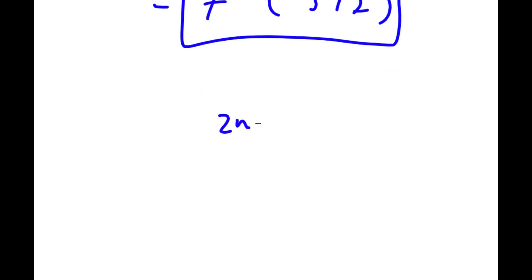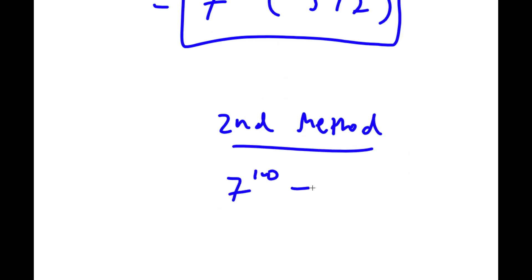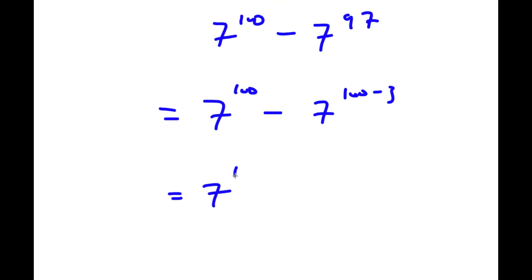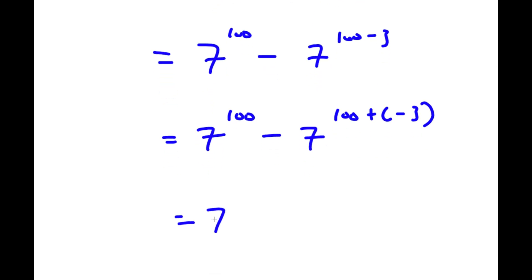Now I have a second method of solving this problem. I have 7 to the power of 100 minus 7 to the power of 97. This time, instead of changing 100 to 97 plus 3, I'm going to change 97 to 100 minus 3. So I have 7 to the power of 100 minus 7 to the power of 100 minus 3, which I can rewrite as 7 to the power of 100 minus 7 to the power of 100 plus negative 3.